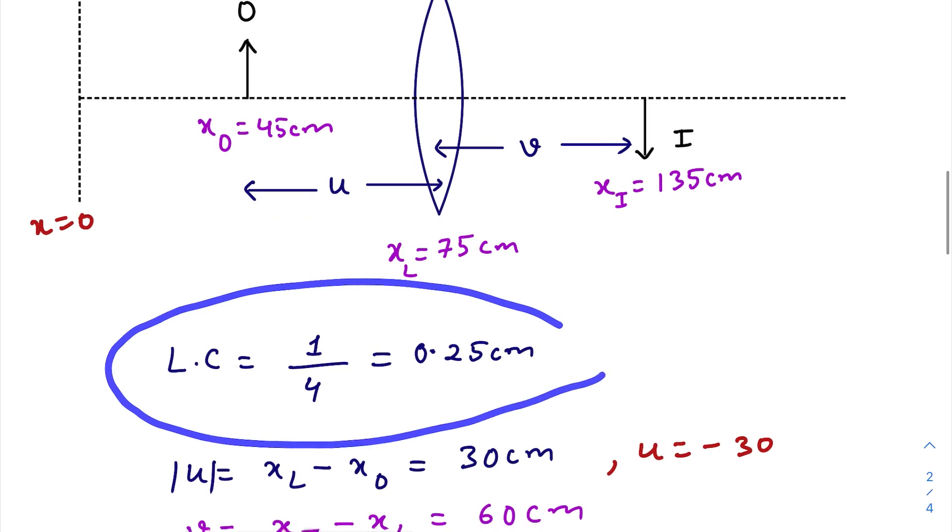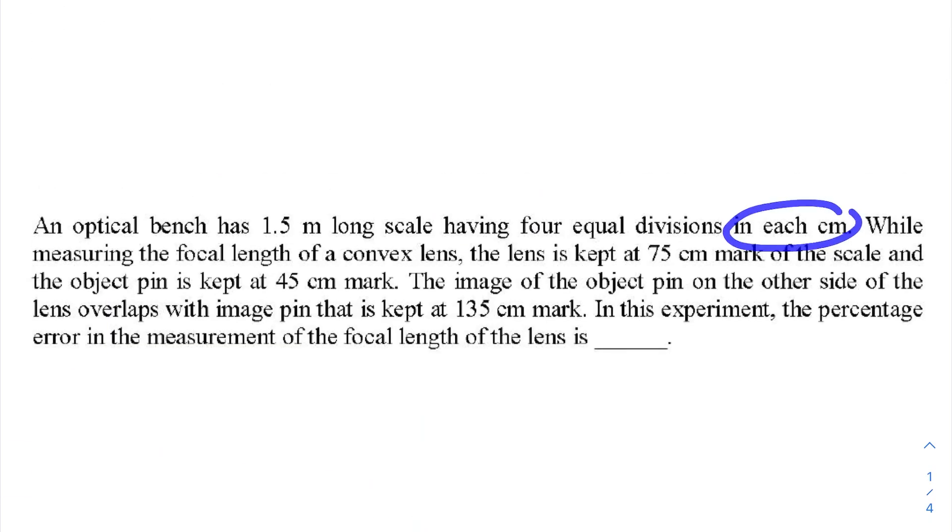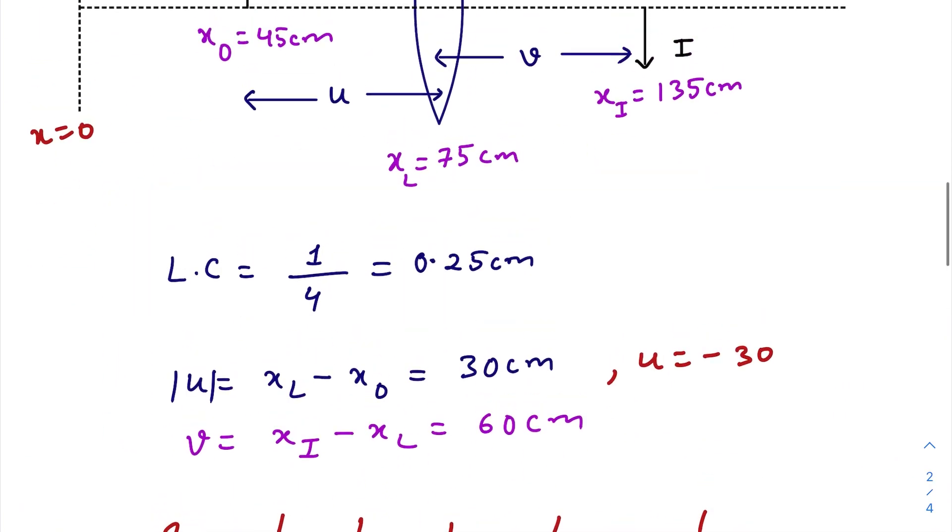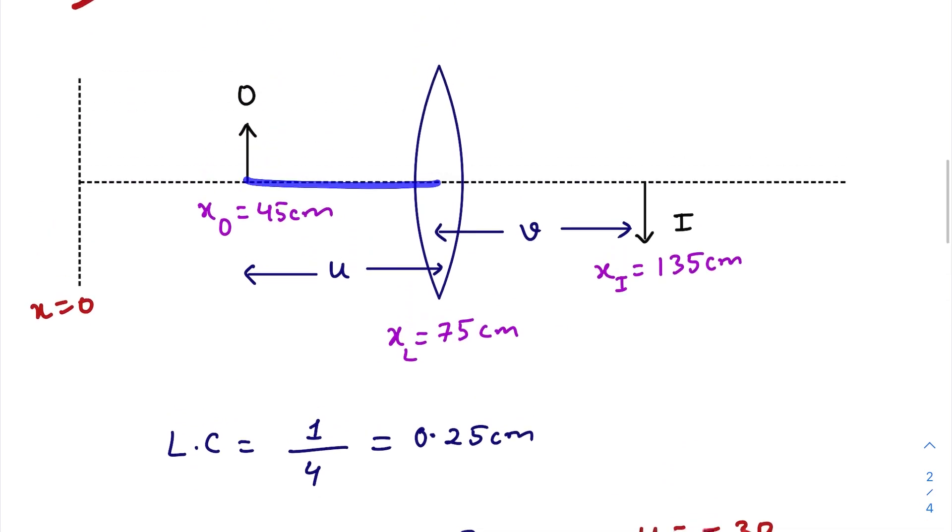Okay, so first let us find out the least count. They have said that one centimeter mark is divided in four equal divisions. So least count is one by four, that is 0.25 centimeter.